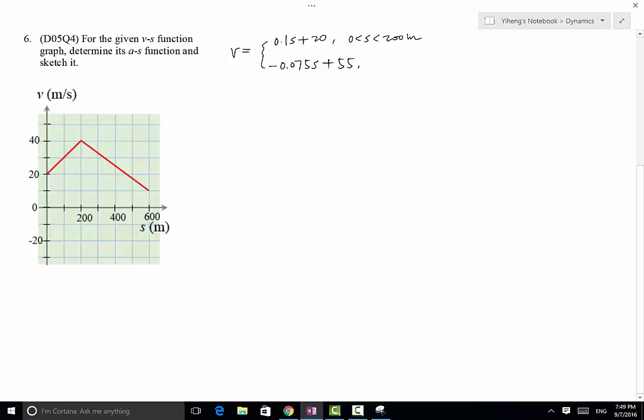You can verify that when s equals 600, if you plug in negative 0.075 times 600 plus 55, that will give you 10 back. That's v at s equals 600. So this is when s is between 200 meter and 600 meter. From the graph, we can read these two linear equations.